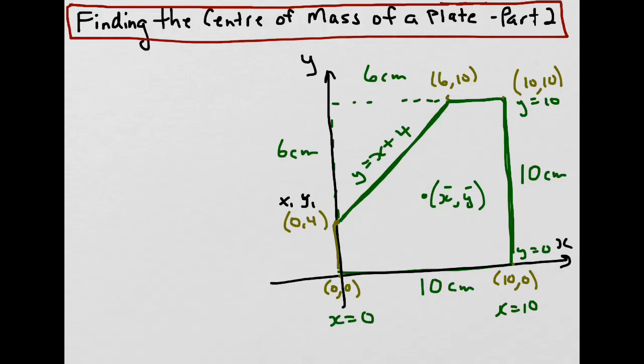If we look at the diagram, we can see that the area of the plate would be the area of the entire square minus the area of the triangular part. So the area of the plate would be the area of the square minus the area of the triangle.